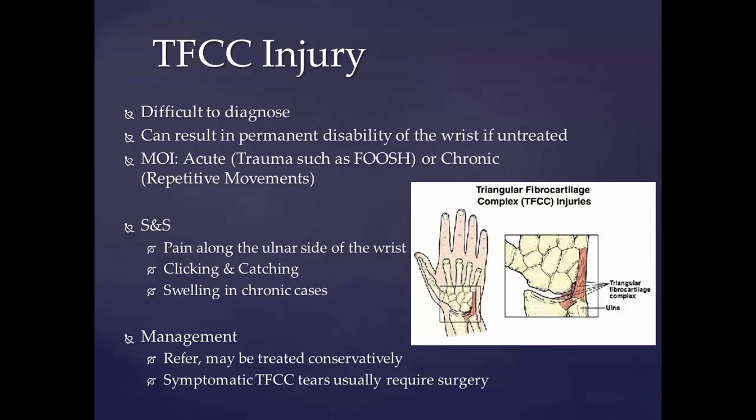Perforations and defects in the TFCC are not all traumatic. There is an age-related correlation with lesions in the TFCC, but many of these defects are asymptomatic, meaning the patient doesn't experience symptoms. These lesions commonly occur in patients with positive ulnar variants. Chronic and excessive loading throughout the ulnar carpal joint causes degenerative TFCC tears, which are a component of ulnar impact syndrome.